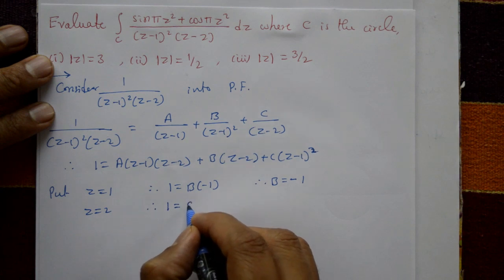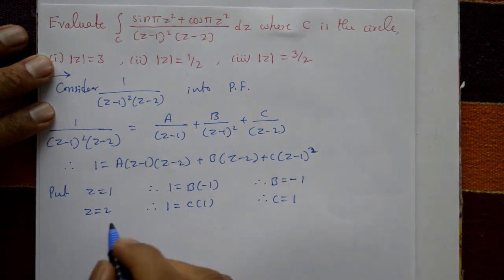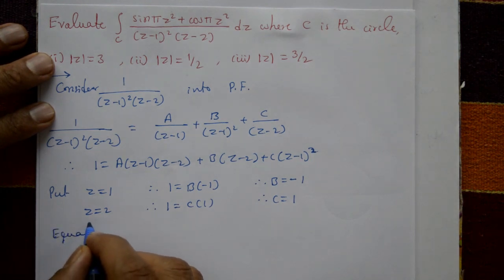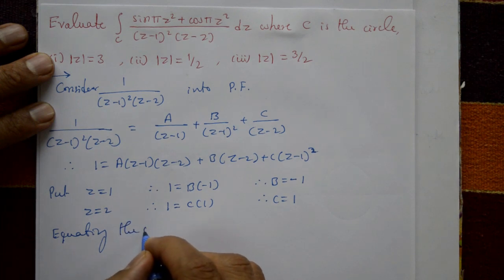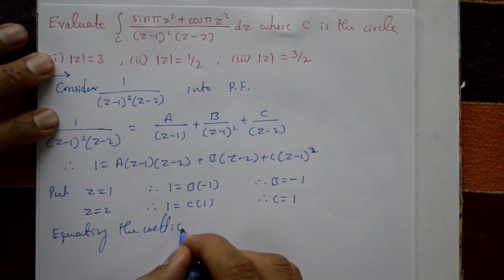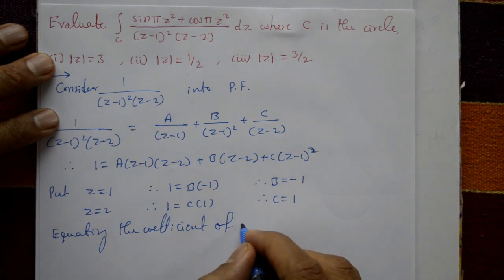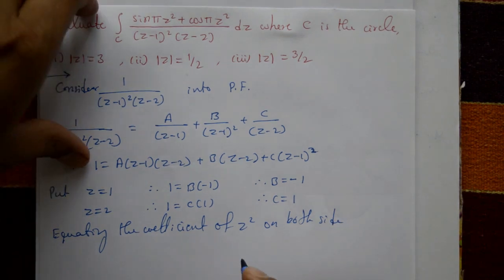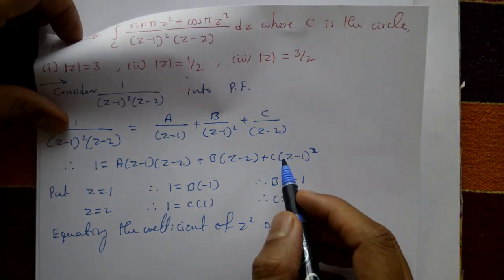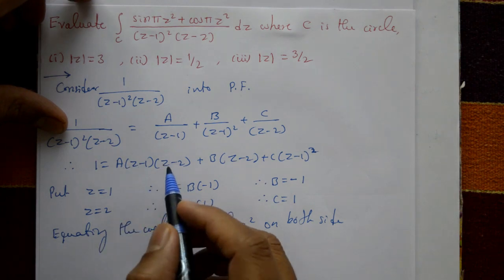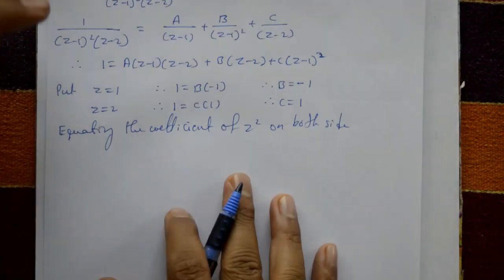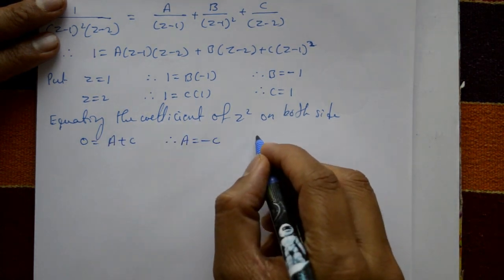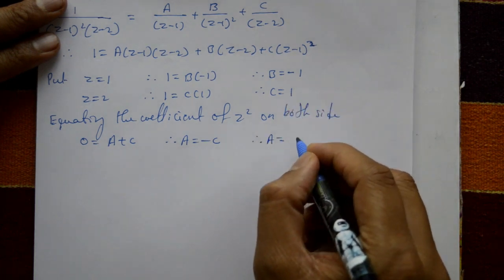Putting z = 2: 1 = C(1), so C = 1. Equating coefficients of z² on both sides: the left-hand side has no z² term, so 0 = A + C, giving A = -C = -1.